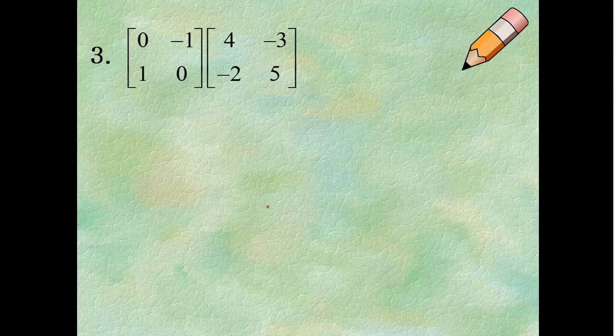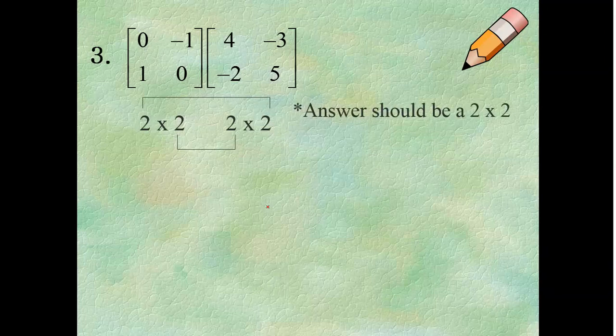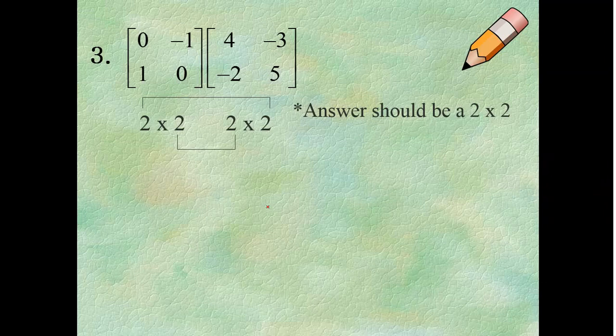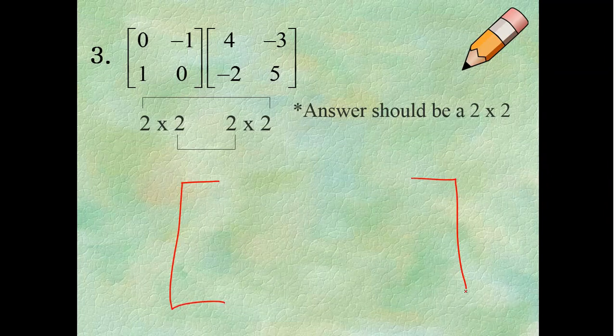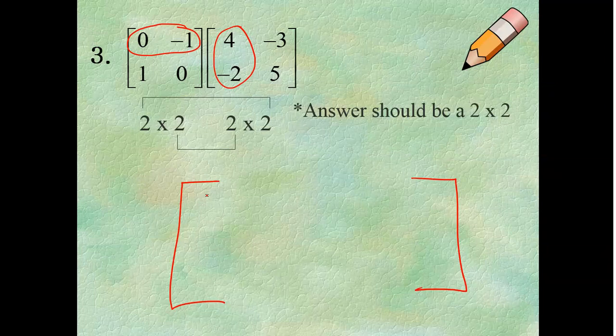Let's try number 3. So, I have a 2 by 2 matrix. So, I know my answer. My middles are the same. So, I'm going to get an answer of a 2 by 2. So, let's make our matrix here. Multiply the rows by the columns. So, 0 times 4 is 0. And negative 1 times negative 2 is 2. So, I'm going to add on 2.